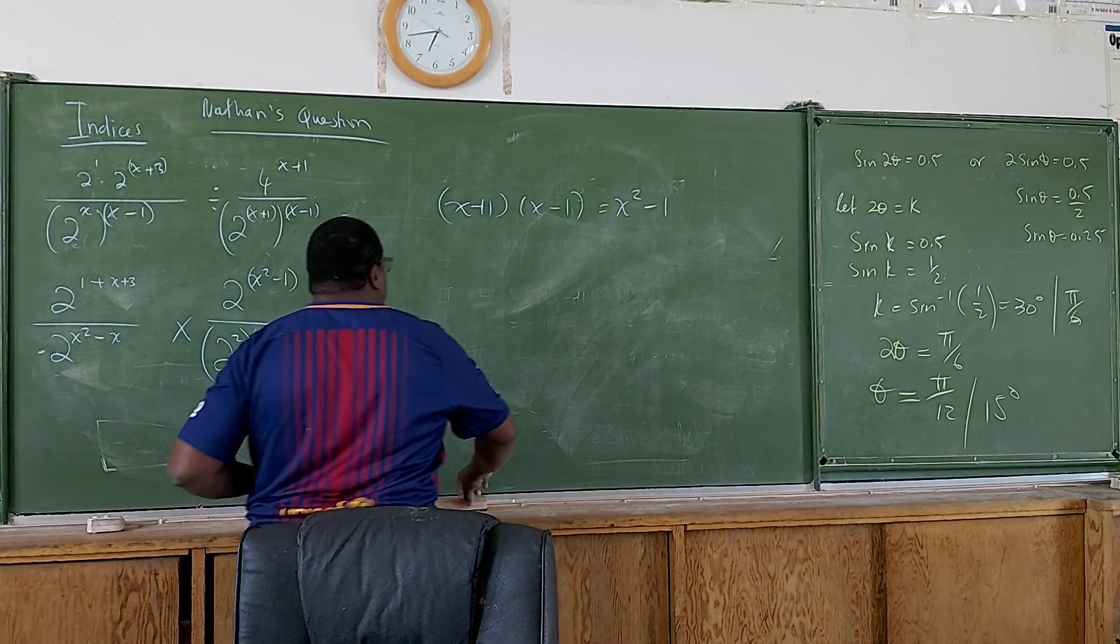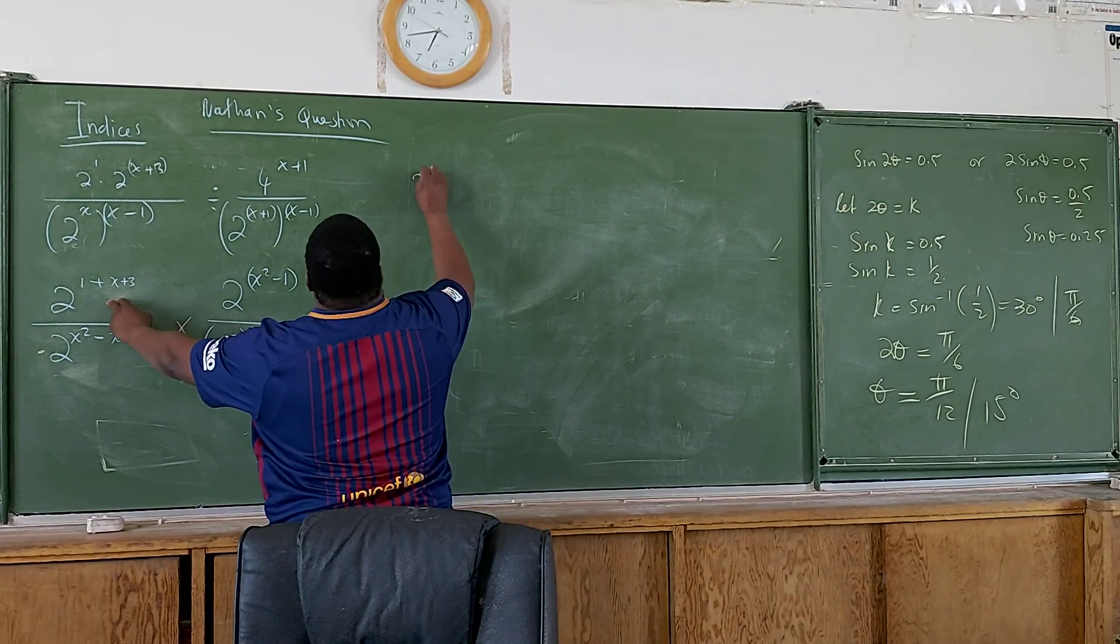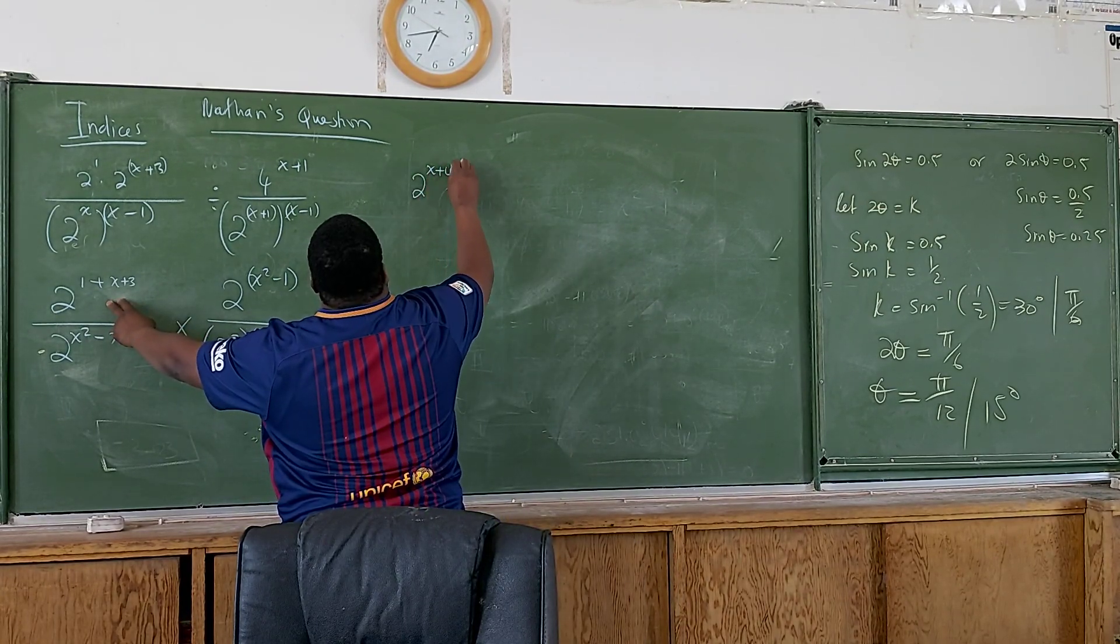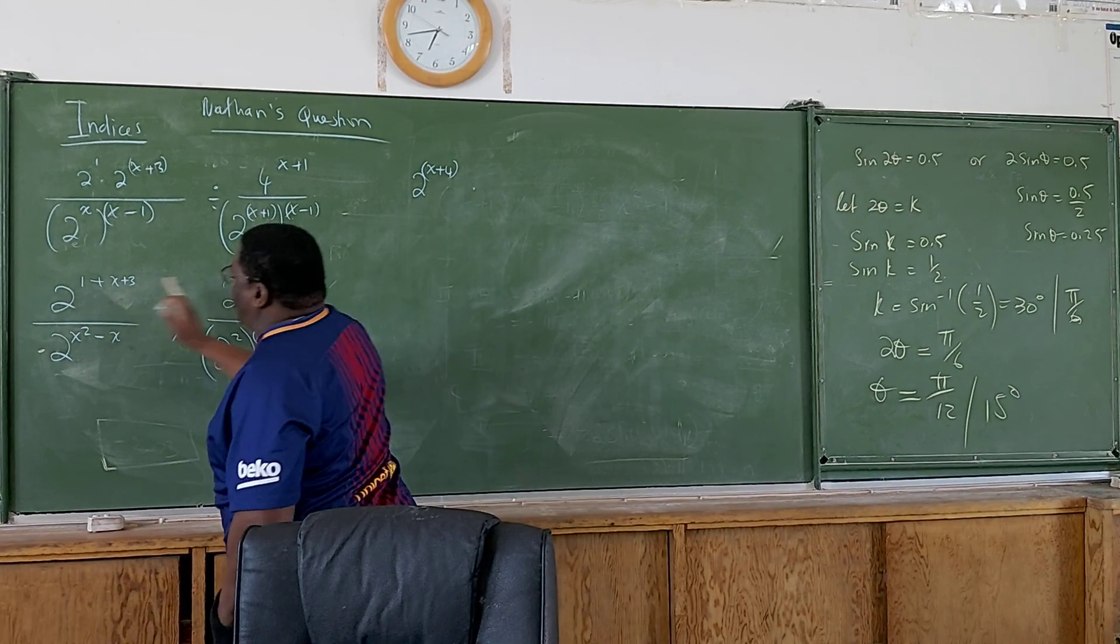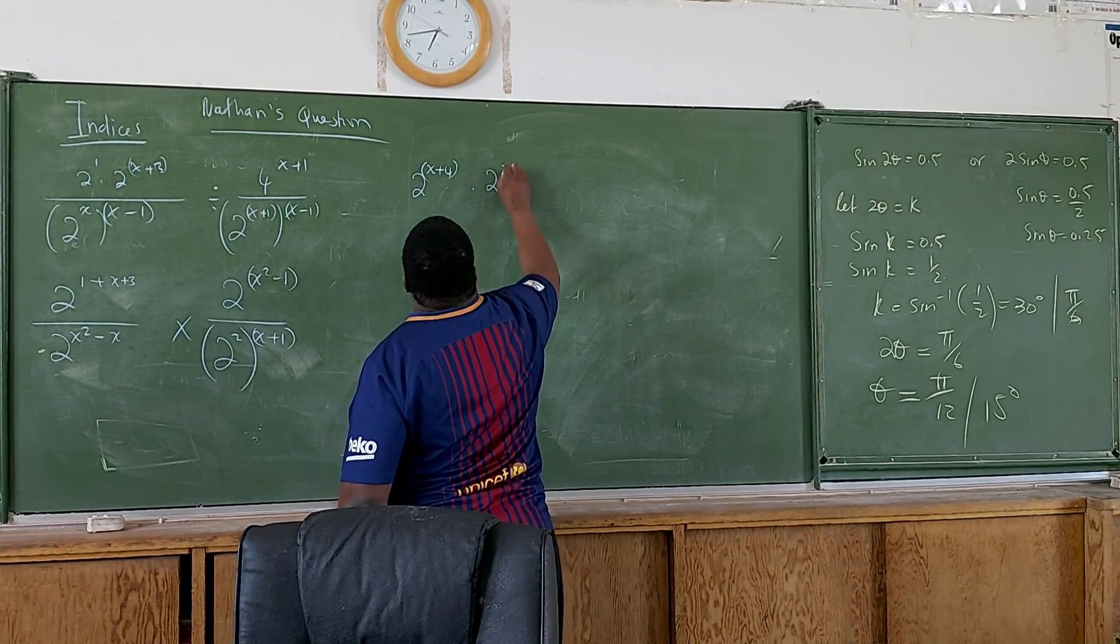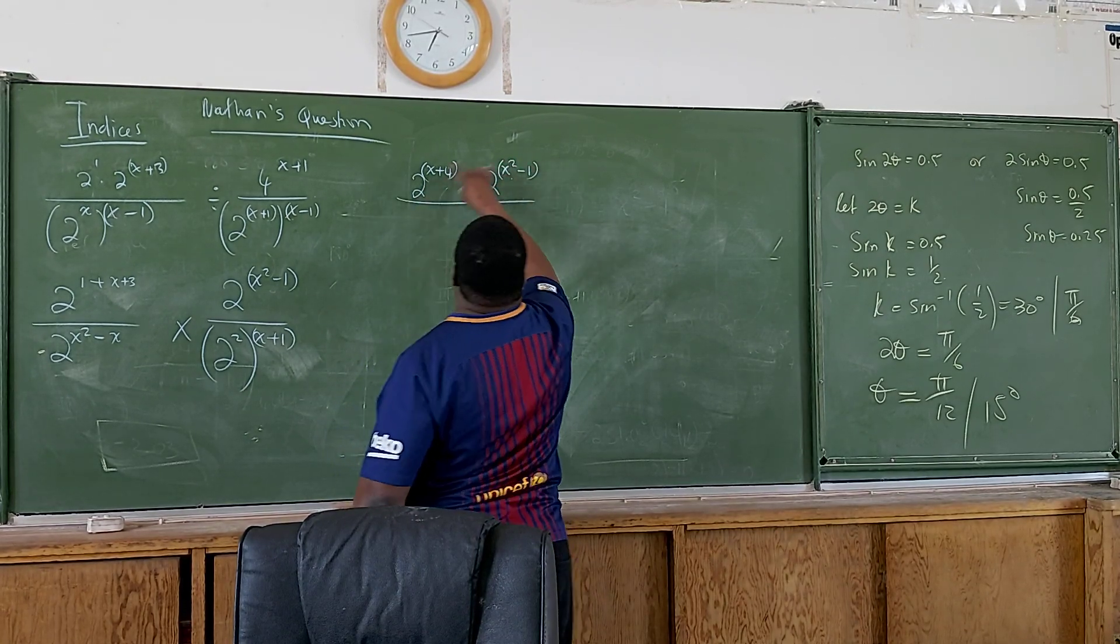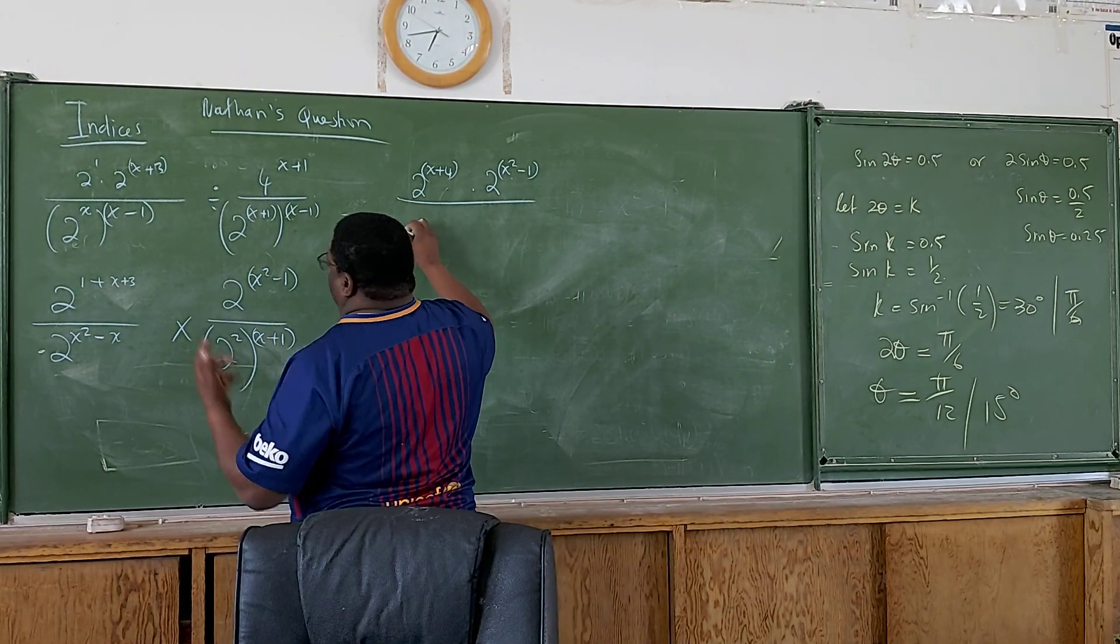And on top to get 2 raised to the power of x plus 4. Then here, because concept is multiplied by numerator, denominator, denominator, denominator. This is then 2 raised to the power of x squared minus 1. So I'm going to add that stuff. You can also do that.